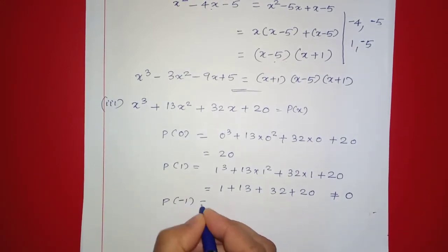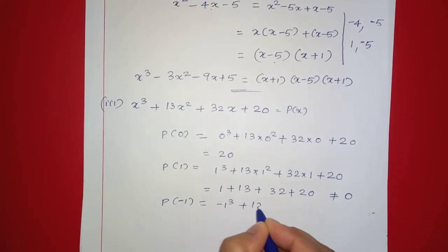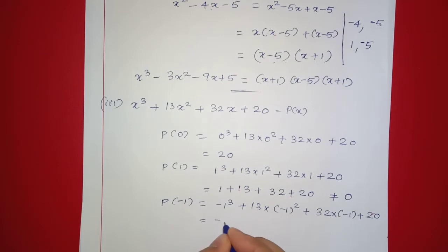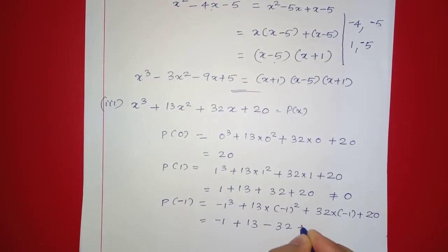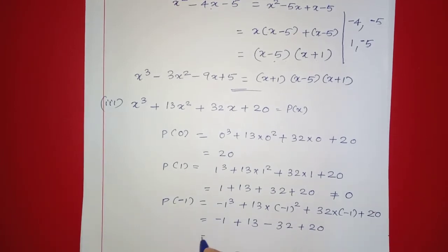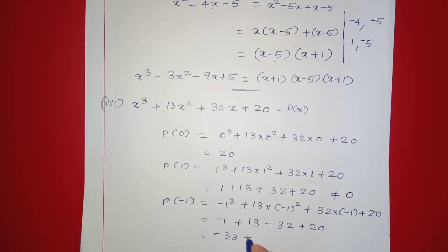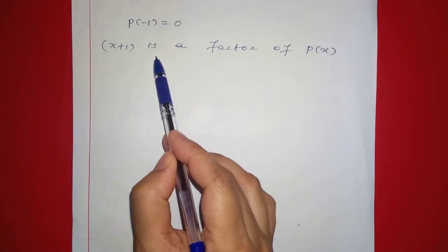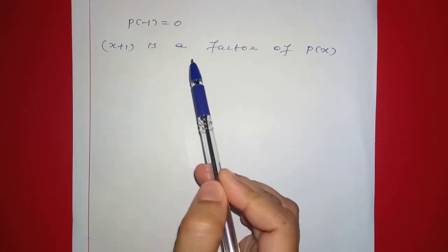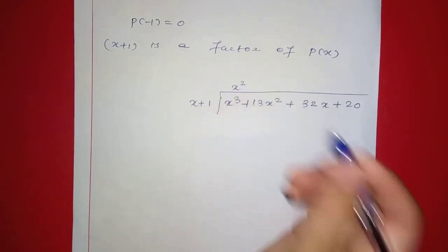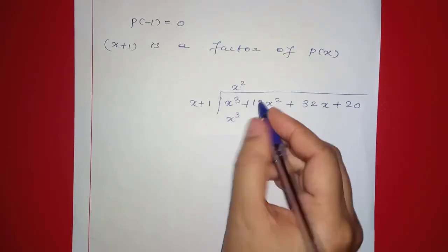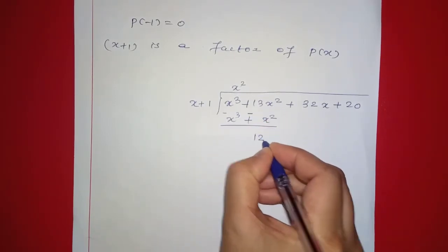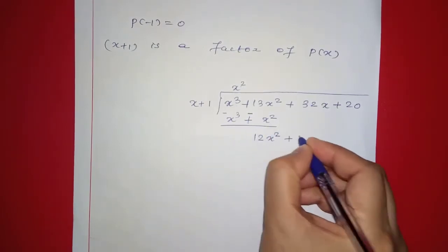P of negative 1: negative 1 raised to 3 plus 13 into negative 1 squared plus 32 into negative 1 plus 20. That is negative 1 plus 13 minus 32 plus 20. Negative 1 minus 32 equals negative 33, and 13 plus 20 equals 33. So this equals 0. P of negative 1 equals 0, so x plus 1 is a factor of P of x.